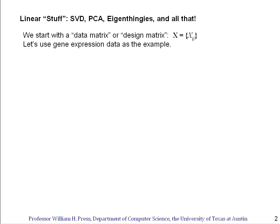This is a unit on low rank approximation of data, and it's the first of three units on what I like to think of as linear stuff. That's singular value decomposition, principal component analysis, eigenthingies, that is to say any kind of data analysis that people dress up by using the word eigen in front of it, and all that kind of stuff. And we'll see that it's basically all one unified piece. We start with what's called a data matrix, also called a design matrix. To see what this is, let's use gene expression data as an example.